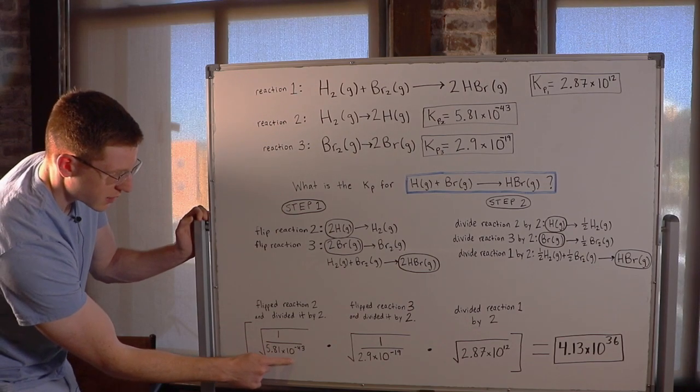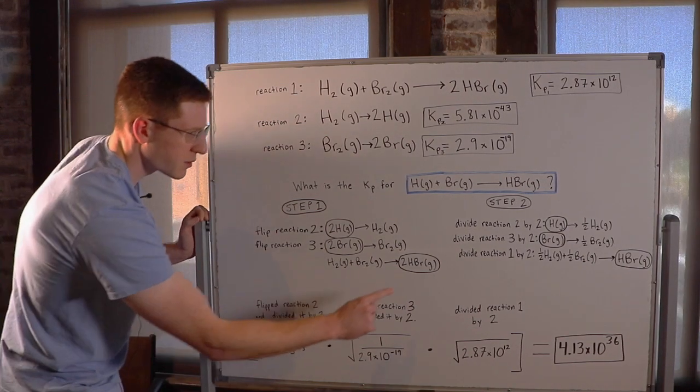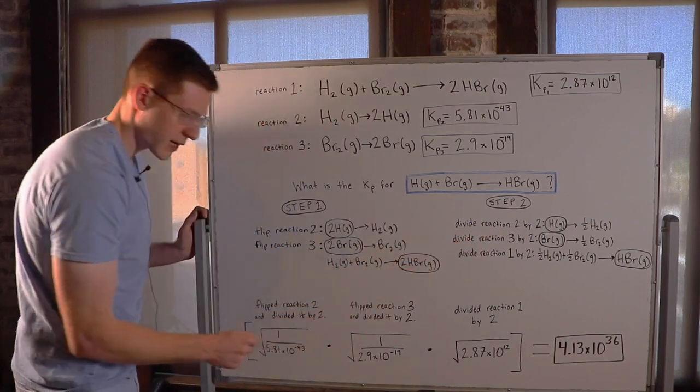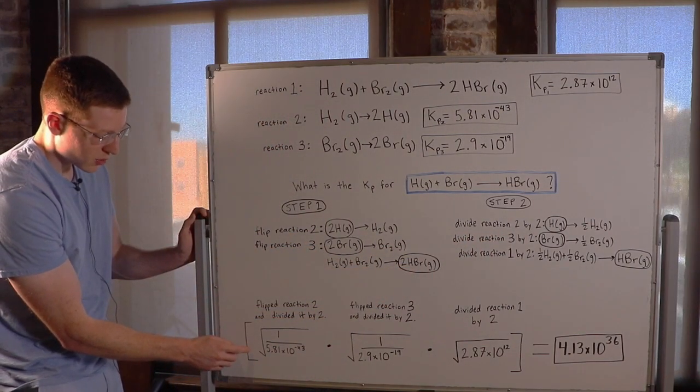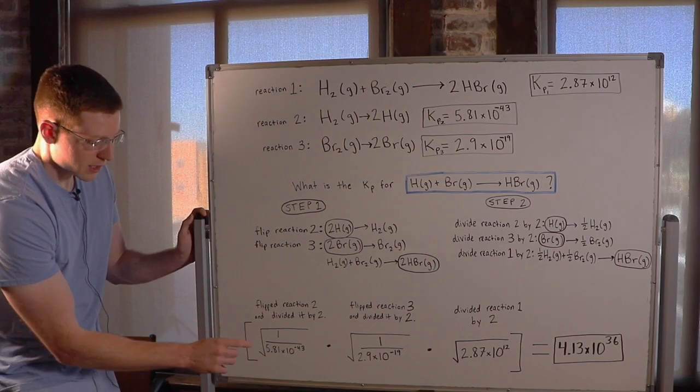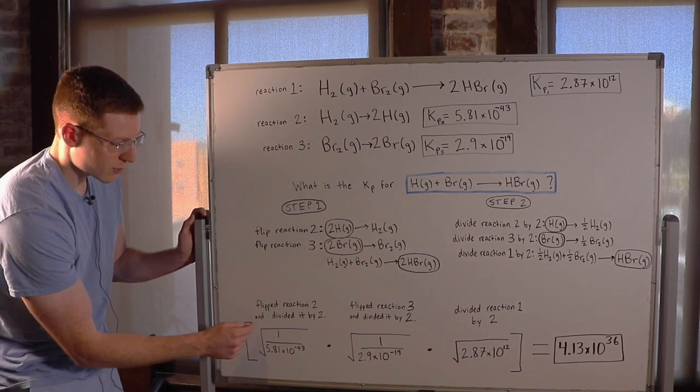Now it's 1 over 5.81 times 10 to the negative 43, but then I divided it by 2. And when I divide a reaction by 2, I have to take the square root of its K. So I took the inverse and then the square root of it.